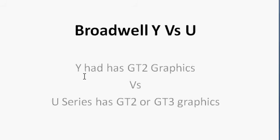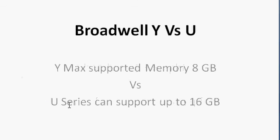In terms of graphics, the Y-series has a lower number of shaders and cores, so its performance will be lower than the U-series. The U-series comes with either GT2 or GT3 graphics, and the Y-series with GT2 will be slower than the U-series models that come with GT3 graphics.